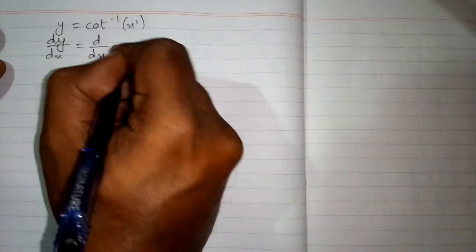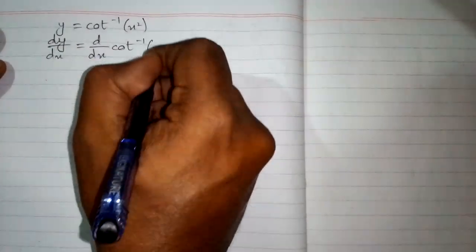In this video, we will find the derivative of the function y equals inverse cotangent of x squared. So first, we will differentiate both sides with respect to x. So we have dy by dx equals the derivative of inverse cotangent of x squared.